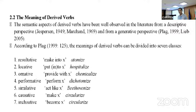2.2: The Meaning of Derived Verbs. The semantic aspects of derived verbs have been well observed in the literature from the descriptive perspective and from a general perspective. According to Plag 1999, the meanings of derived verbs can be divided into several classes. First, resultative: making X. For example, atomized, meaning making into atoms.